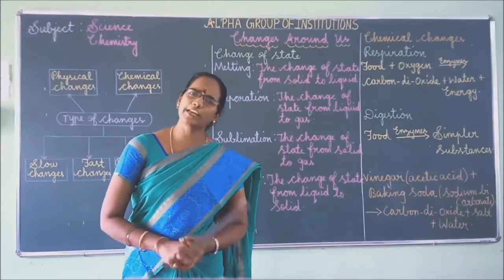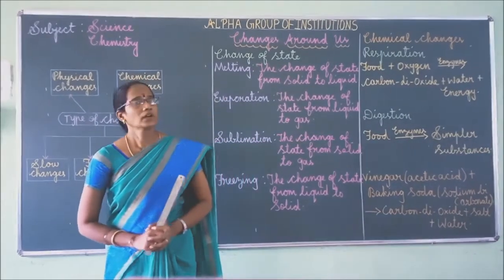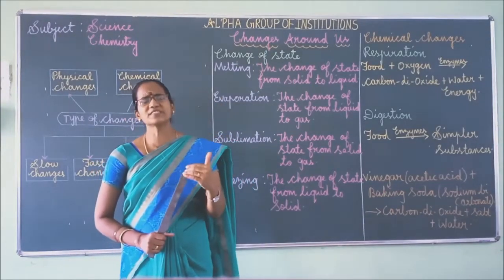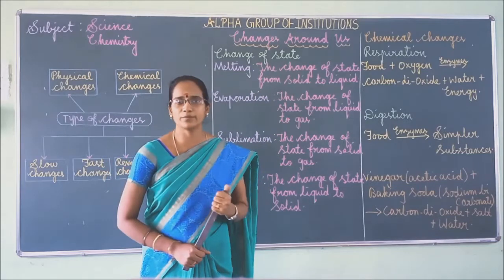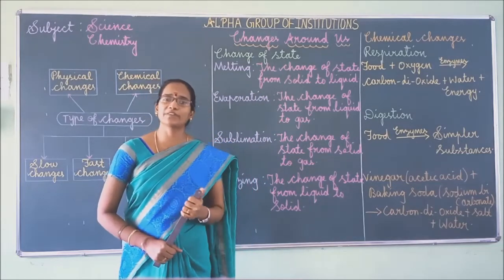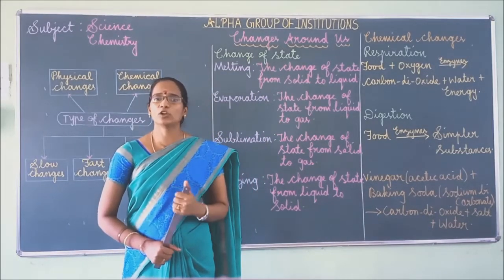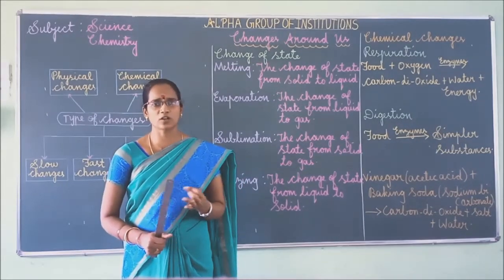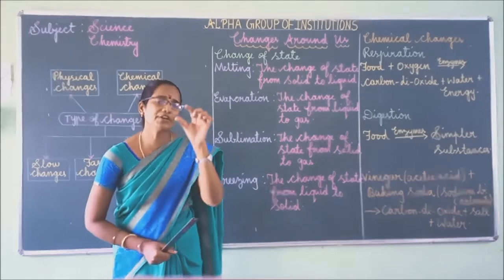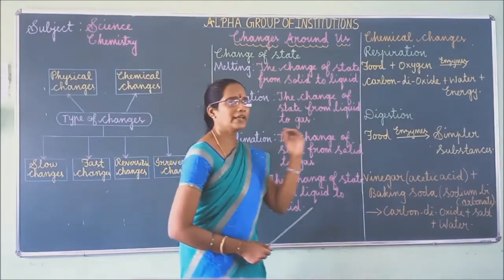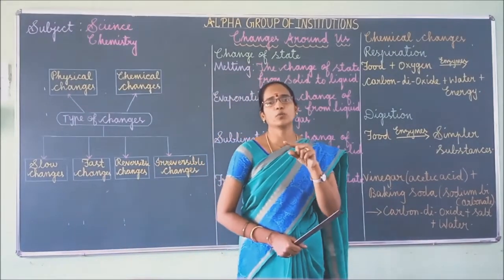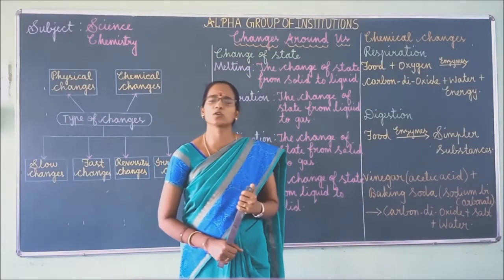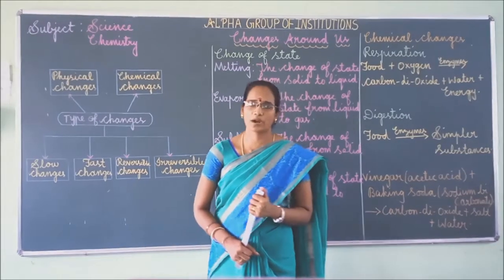Next is periodical change. A periodical change is a change which happens at regular intervals of time. For example: the pendulum of a clock, day and night, and different phases of the moon — full moon, half moon, and so on. These are all periodical changes.